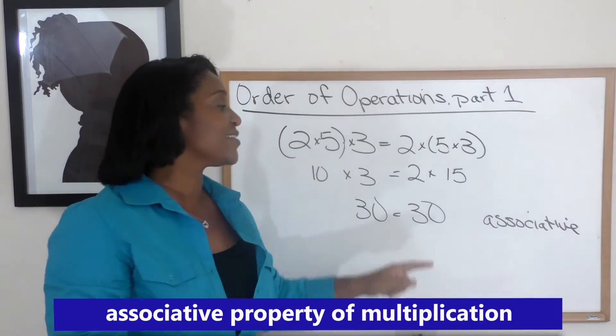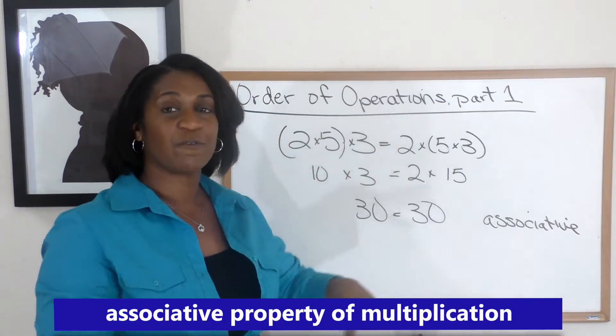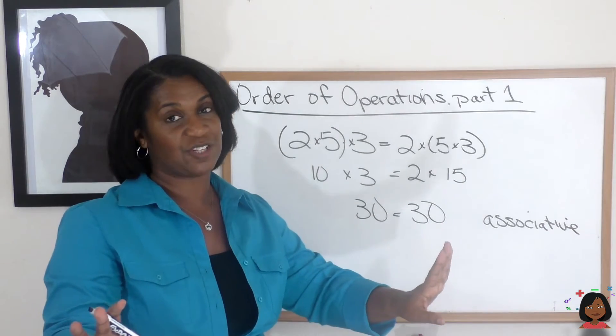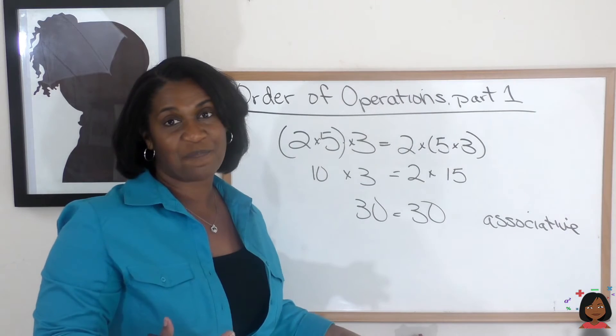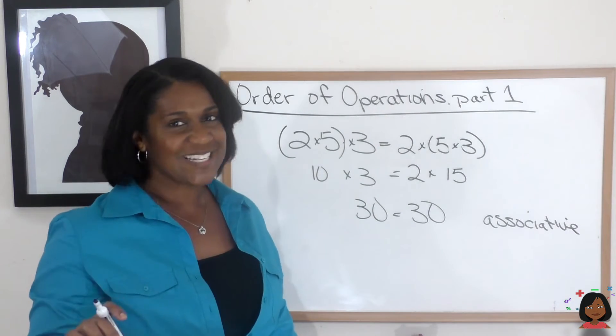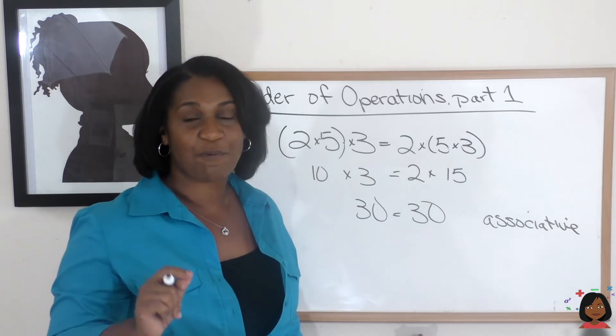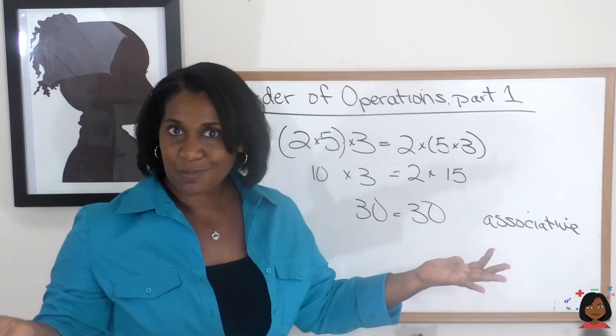Multiplication also has an associative property, which means it doesn't matter if we're dealing strictly with multiplication, the order in which we handle multiplying them. But what about division? Does this count for division? No, it does not. So the associative property applies to addition and multiplication.